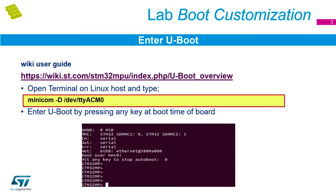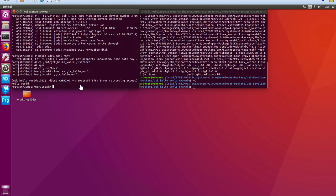Open a terminal on the Linux system — you should already have this open from the previous lab, with minicom already running. We'll need to reset the target board, and when you see the line 'Hit any key to stop autoboot,' you need to hit any key. You only have about one to two seconds to do this, so you might miss it the first time; if so, click reset again using the black button on your target board.